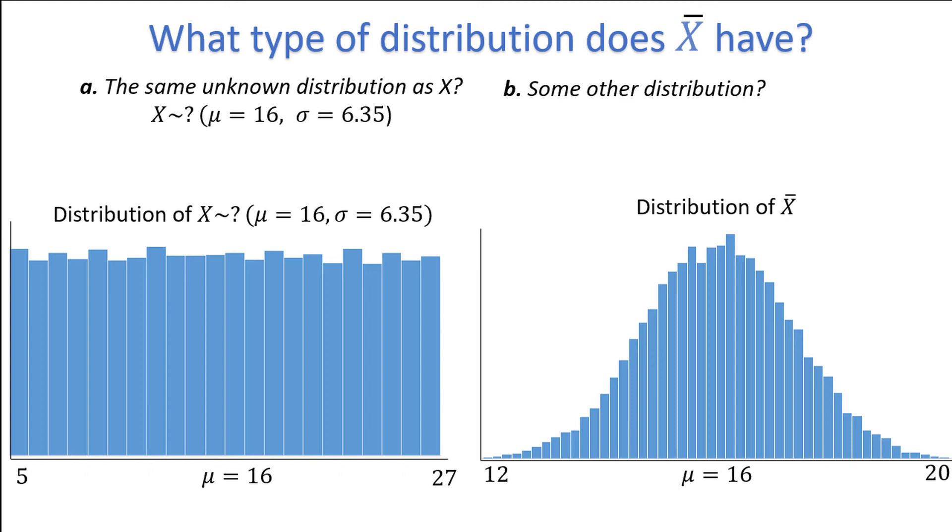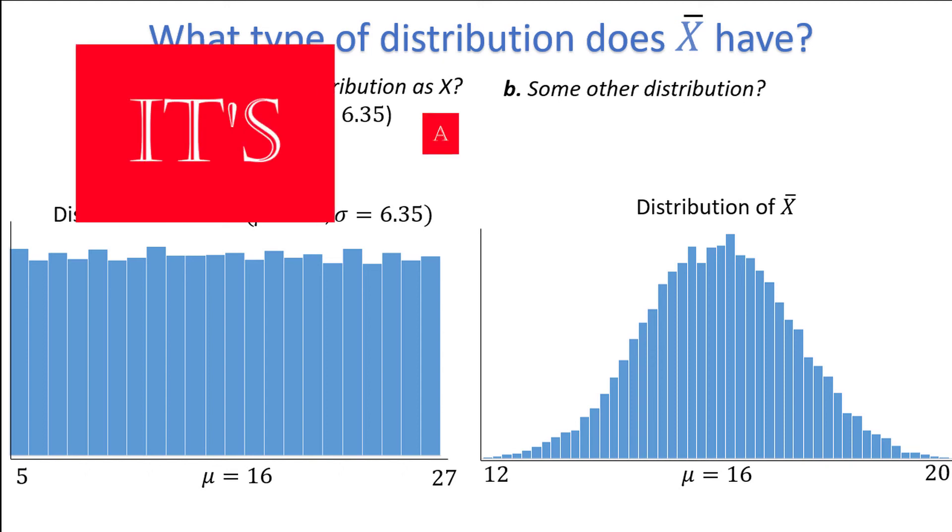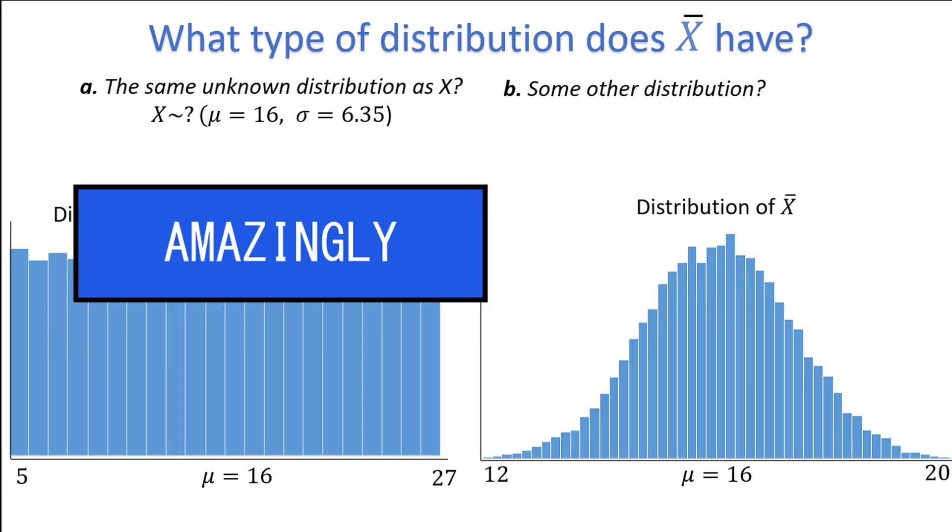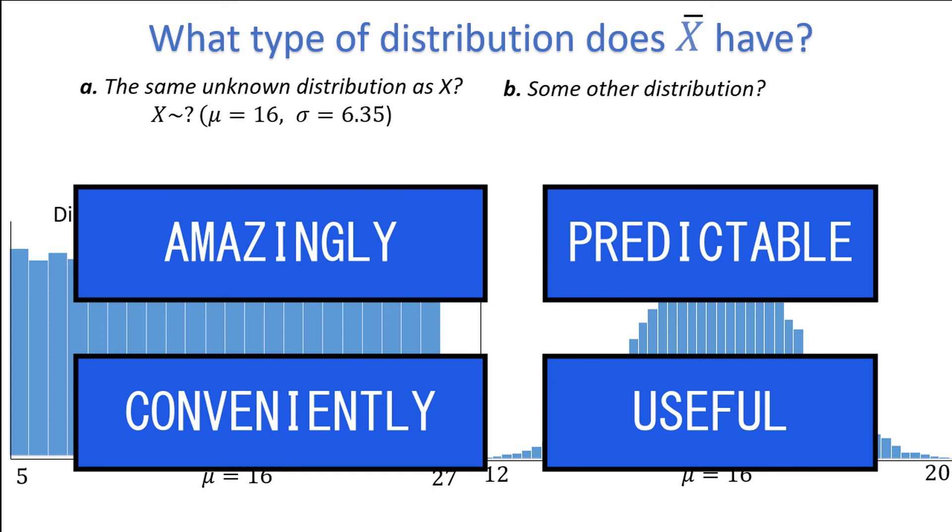Do you notice anything special about the distribution of X-bar? It's a flippin' normal distribution! This is the amazingly predictable and conveniently useful fact about sampling distributions.